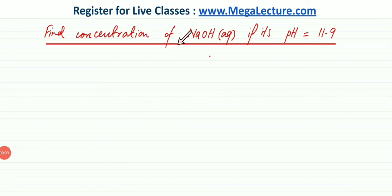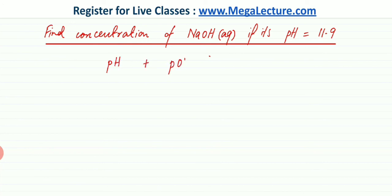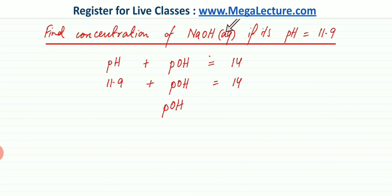Similarly, we can find the concentration of a base like NaOH when the pH is given. The pH is 11.9. Since bases have OH⁻ ions, we should find the concentration of OH⁻ rather than H⁺. Using pH + pOH = 14: 11.9 + pOH = 14, so pOH = 14 − 11.9 = 2.1.